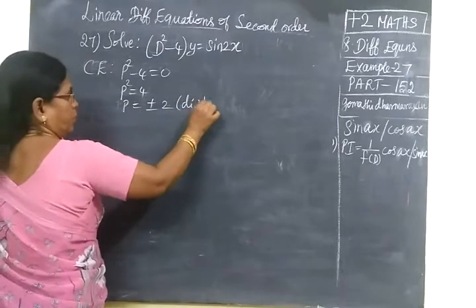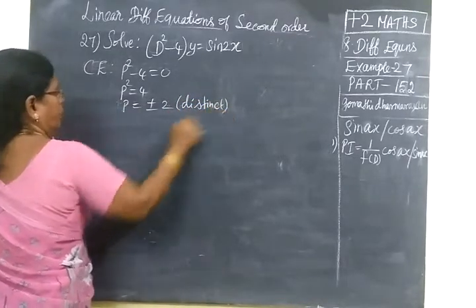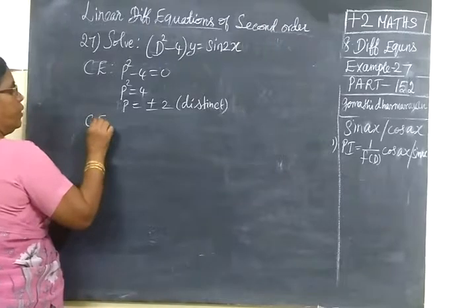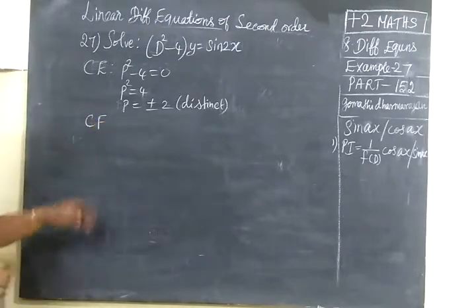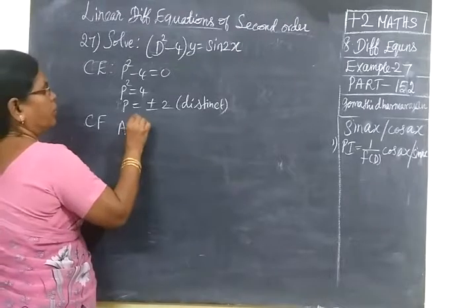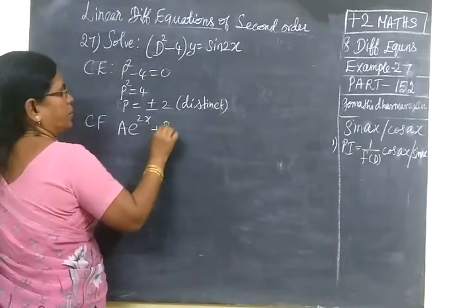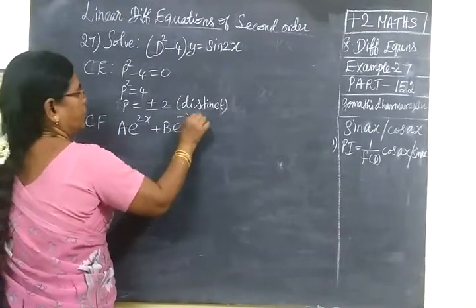Distinct roots means we find the complementary function. Here the complementary function is A e power 2x plus B e power minus 2x.